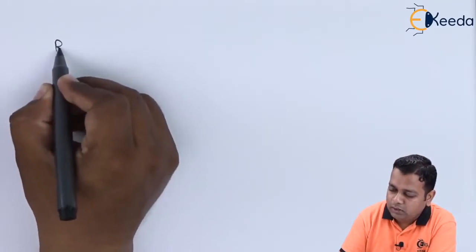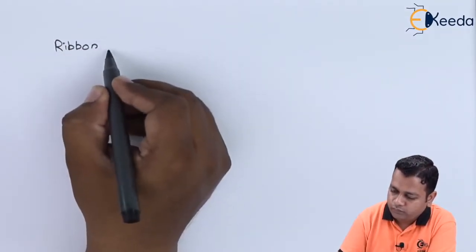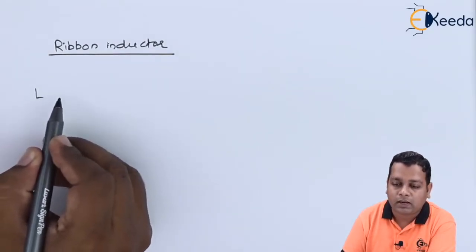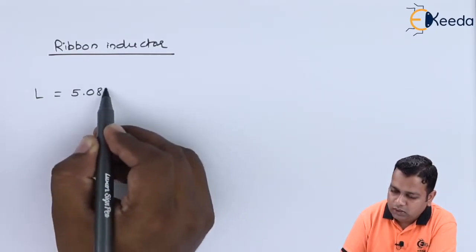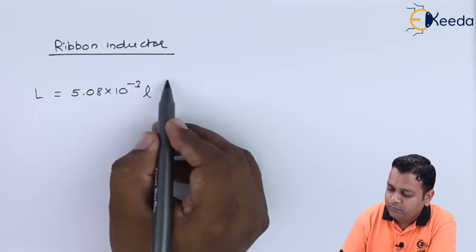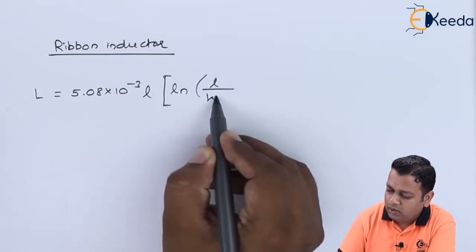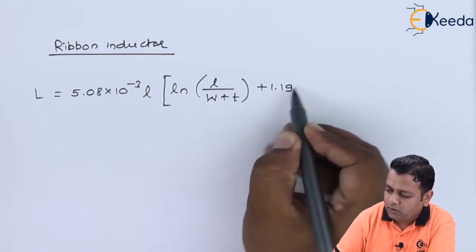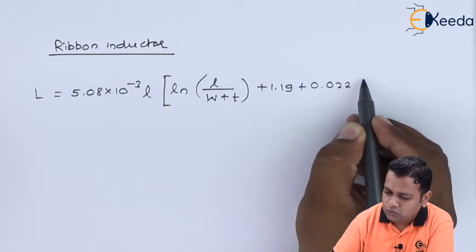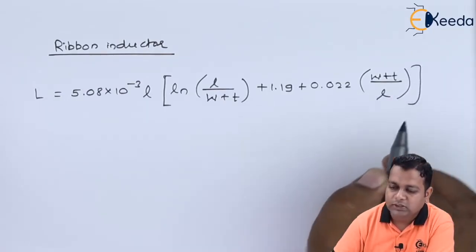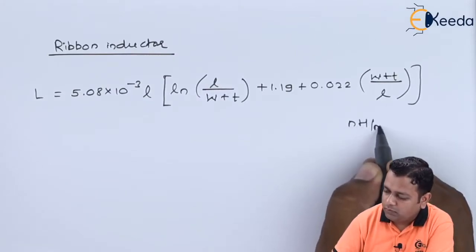Now the various types of inductors with respect to the configurations we have seen — the very first two can be the ribbon inductor. For the ribbon inductor, the inductance value L is computed as: L equals 5.08 times 10 to the power minus 3 times small l, multiplied by the quantity in square brackets: l divided by W plus T, added to 1.19, further added to 0.022 times (W plus T) divided by l. This is obtained in terms of nanohenry per millimeter.